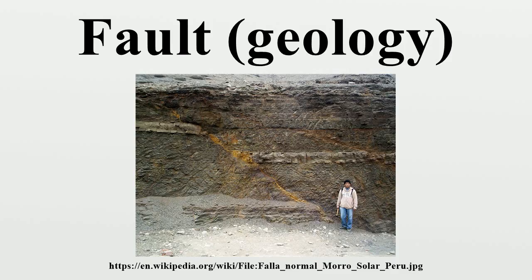Listric faults are similar to normal faults but the fault plane curves, with the dip being steeper near the surface and then shallower with increased depth. The dip may flatten into a sub-horizontal detachment, resulting in horizontal slip on a horizontal plane. The hanging wall may slump along a listric fault, and where the hanging wall is absent, the foot wall may slump in a manner that creates multiple listric faults.